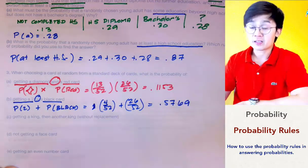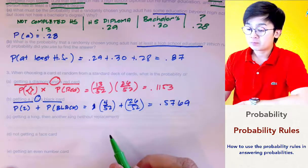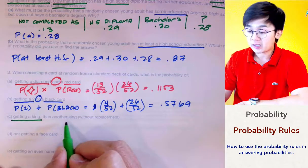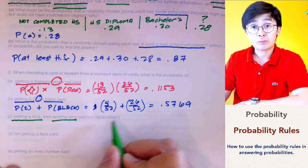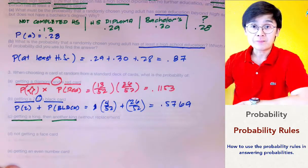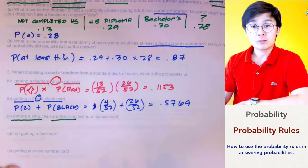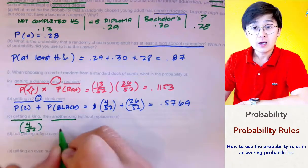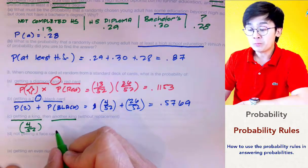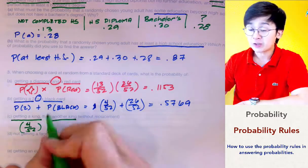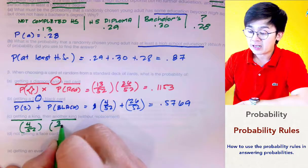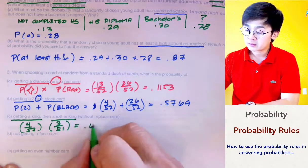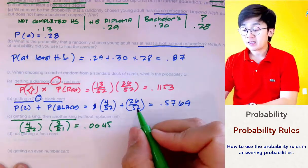For the third probability, these are dependent events: picking a king, setting it aside, and picking another king without replacement. The probability of the first king is 4/52. Since the card is removed, the second draw is 3/51. Multiplying the two probabilities gives 0.0045 — less than 1%.